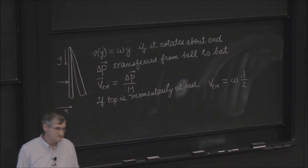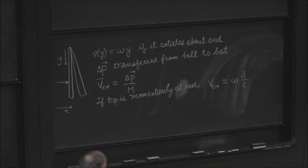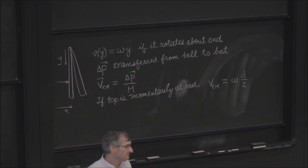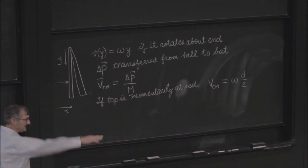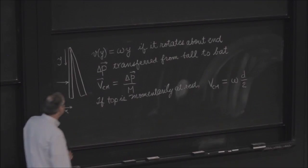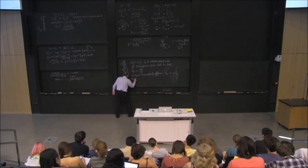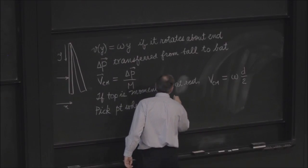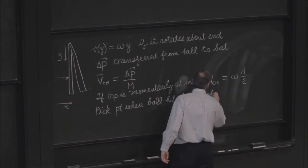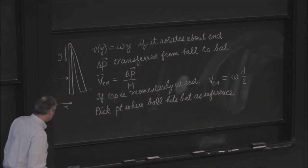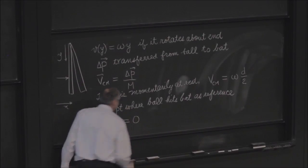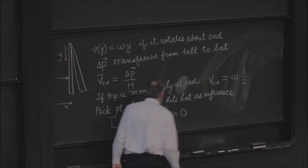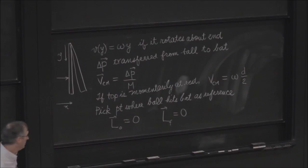So now we have to worry about angular momentum. Which means we get to pick a reference point. One more attempt at picking a reference point. Any ideas? Where the ball hits. Why is that convenient? Because the angular momentum is zero again. So let's pick a point where the ball hits back as reference. Then L0 is zero. Therefore, L final is zero.